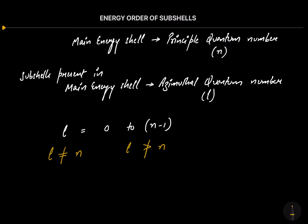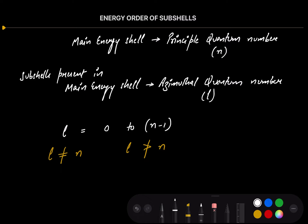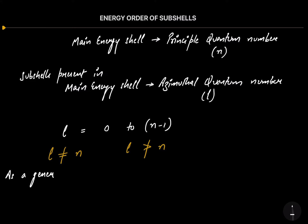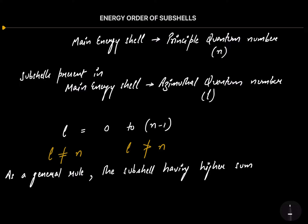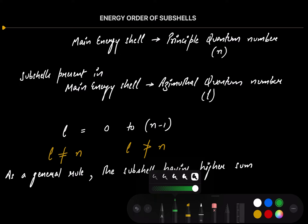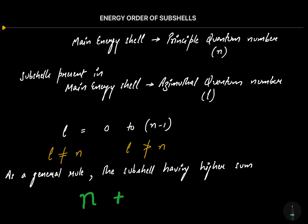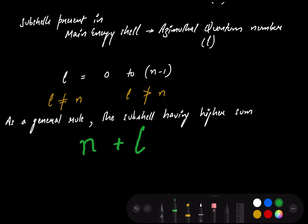Now let's talk about the energy order. As a general rule, the subshells having a higher sum of n plus l — that is, the sum of the principal quantum number and the azimuthal quantum number — will have the higher energy.